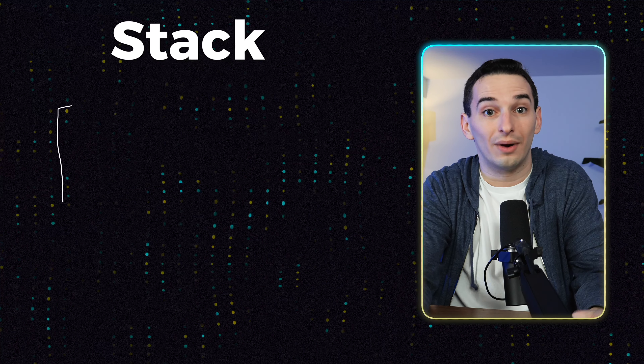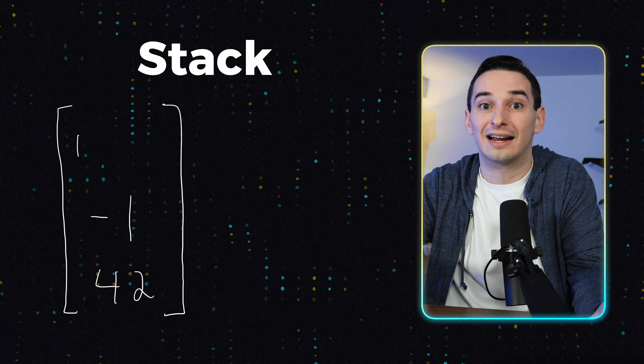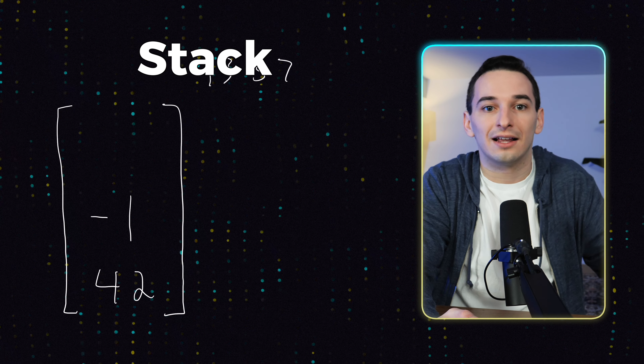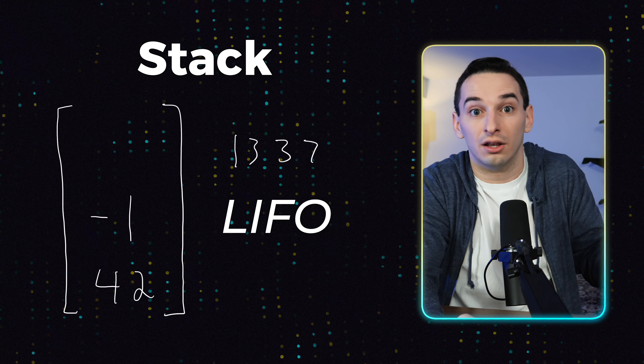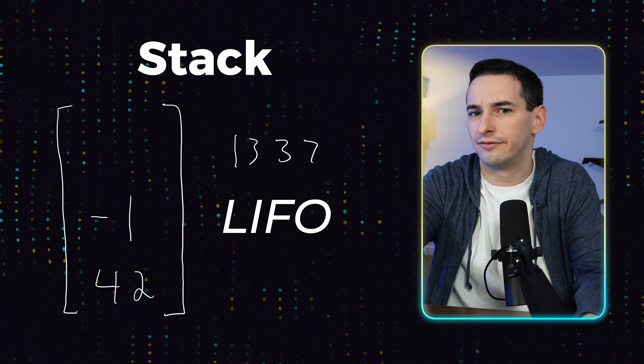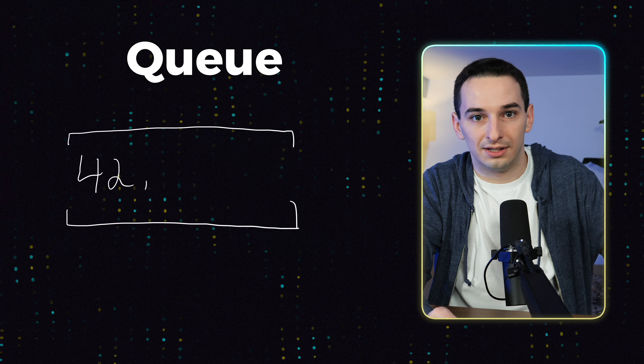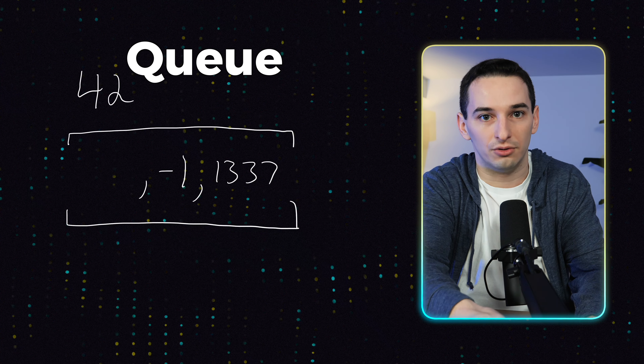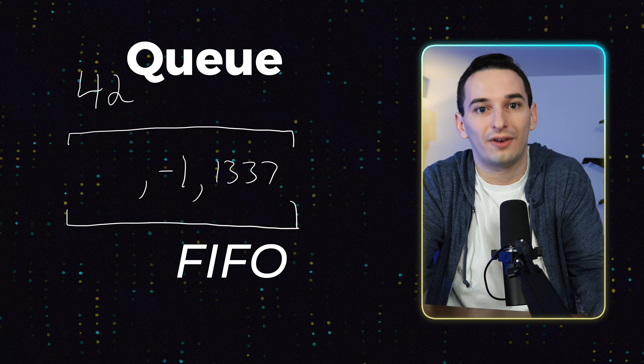Once you understand arrays, I would move on to stacks and queues. At the surface level these work pretty similar to each other, just with the key difference being how you actually remove elements. A stack works similar to stacking playing cards or books — the next element you remove is always going to be the last element you just added. We call this LIFO, meaning last in, first out. On the other hand, queues work just like a queue in real life — whatever element you add first is going to be the first element removed. We call this FIFO, first in, first out.